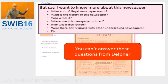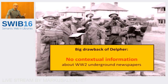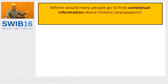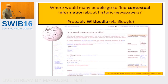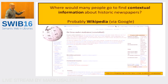The bad news is that you can't answer these contextual questions in Delpher — there is no contextual information available about these illegal newspapers. When I was thinking about this project, I thought: where would most people go if they want to read about historical newspapers? The answer, of course, is Google, and from there they'd end up on Wikipedia. So for this particular title, De Geus onder Studenten, there is a decent Wikipedia article.